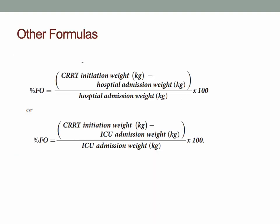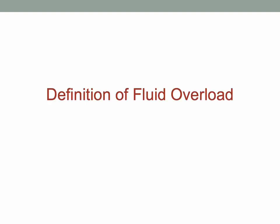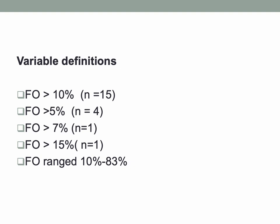There are other formulas to calculate fluid overload as well. There are variable definitions for fluid overload in the pediatric literature, with different percentages used to quantify it. The majority of studies consider fluid overload as anything more than 10% cumulative fluid overload, while some use thresholds of more than 5%, 7%, or 15%. Therefore, reported fluid overload ranged between 10% to 83%, depending on the threshold considered significant.